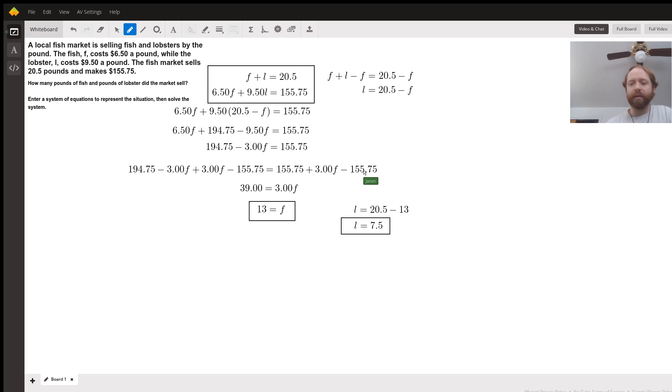That's what's going on with this line. You can split that into multiple steps or even skip right by this step if you're comfortable with exactly what's going on here. But what we're left with is that $194.75 minus $155.75 is $39.00.